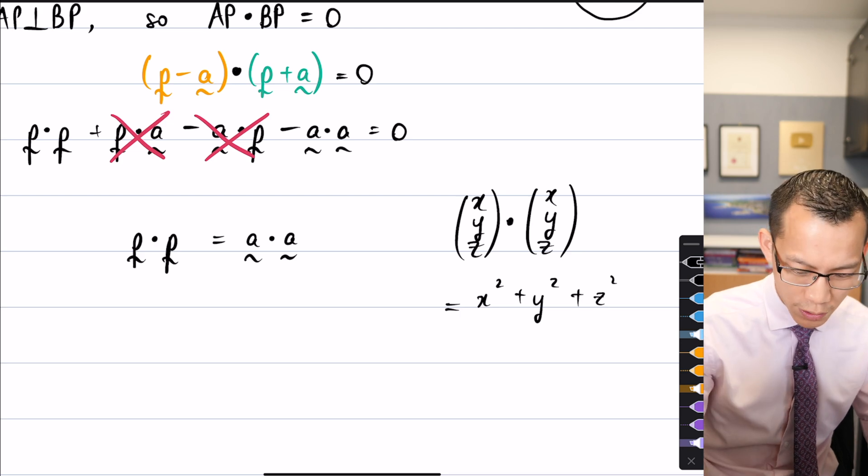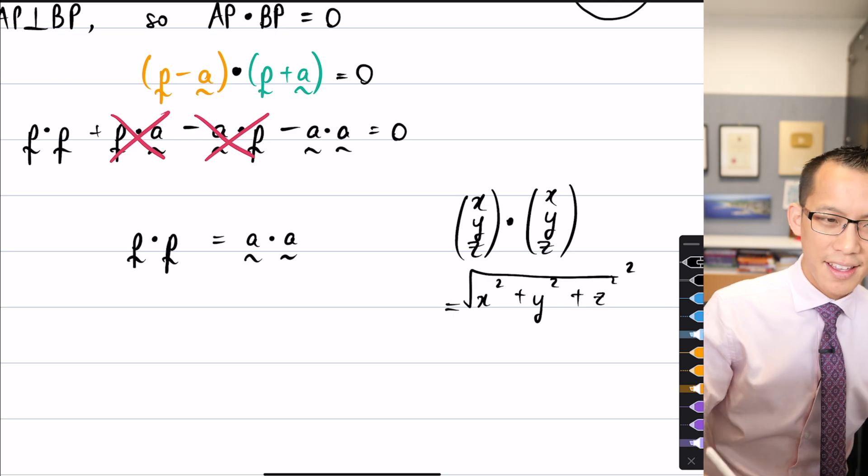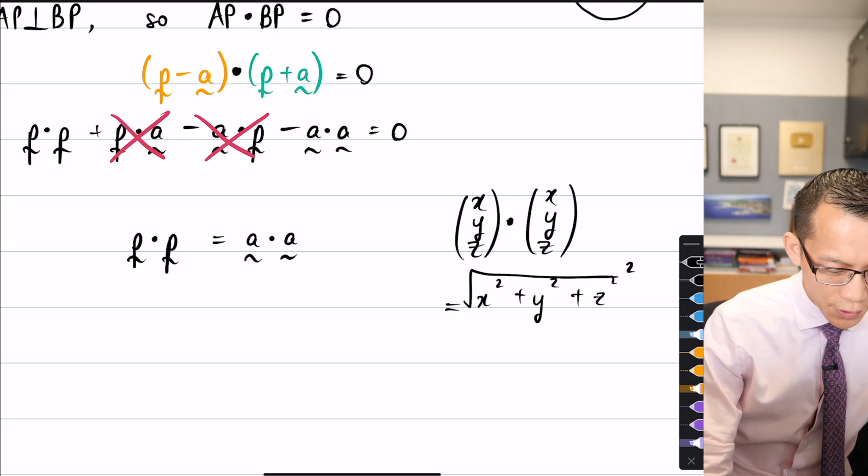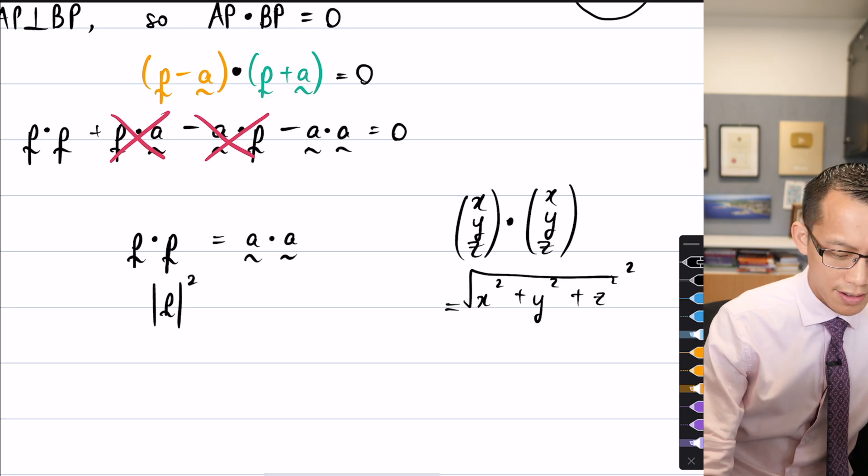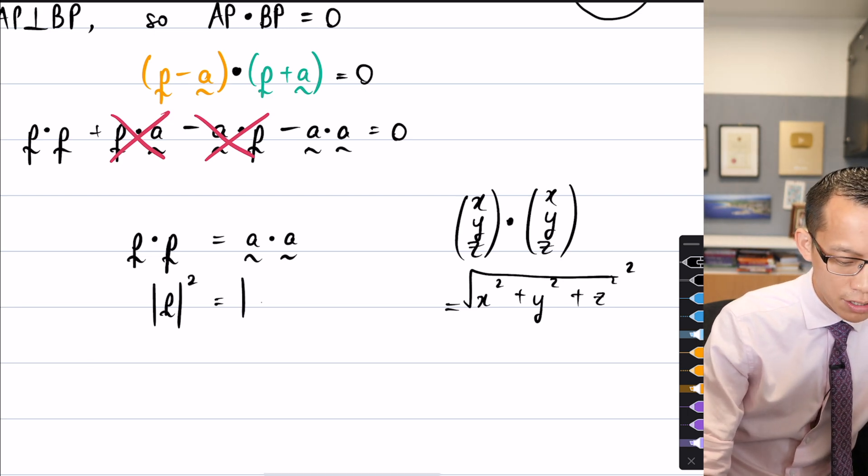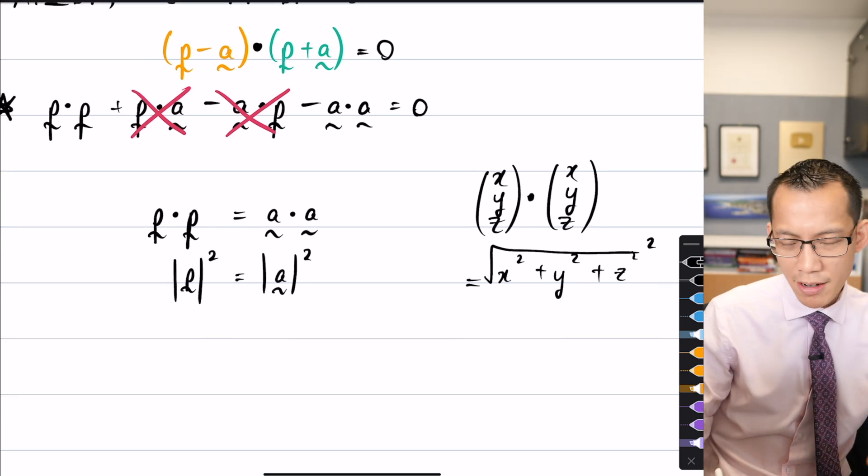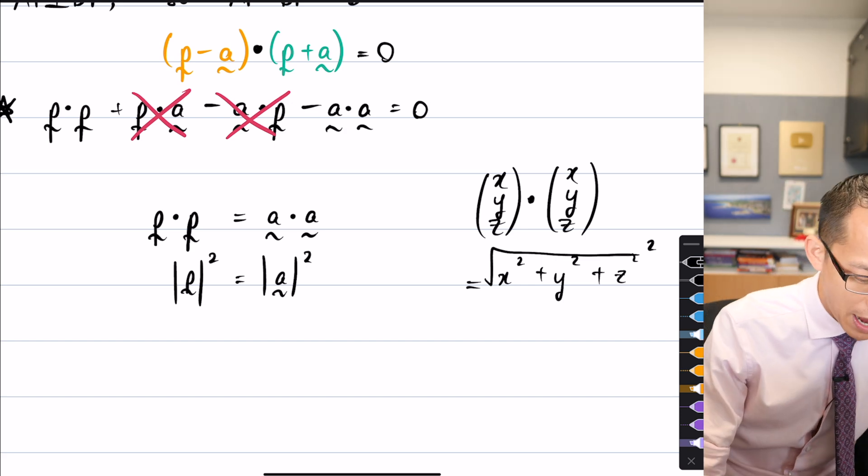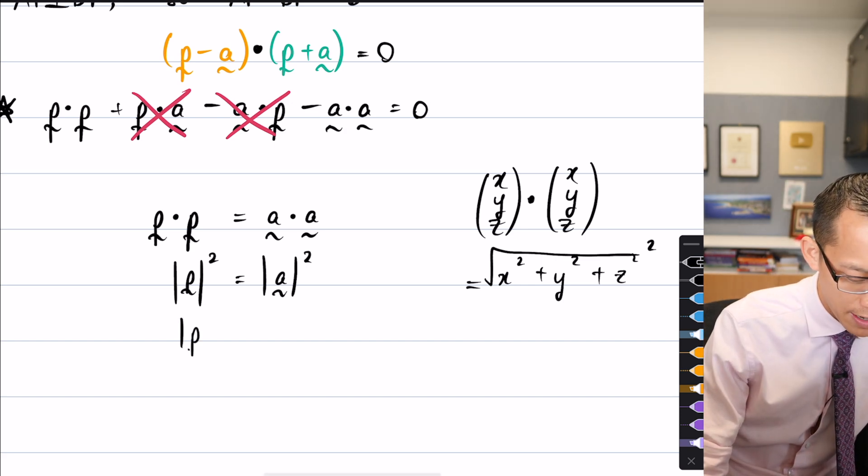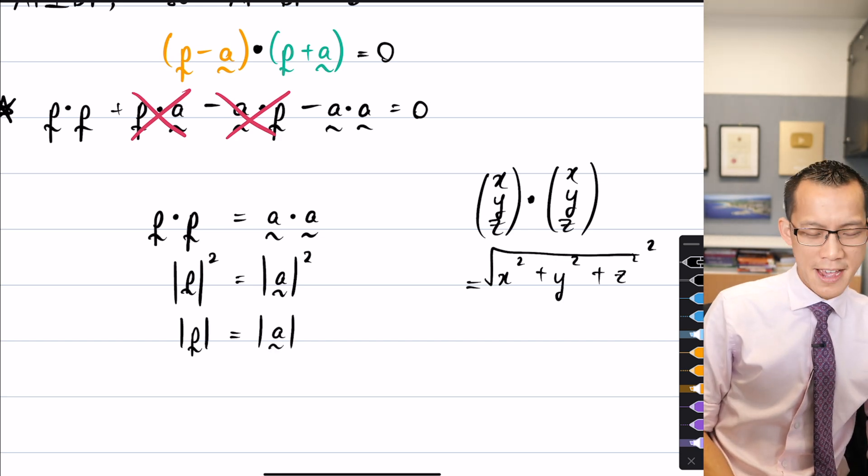Now, what this really is, is just, this is the square of the magnitude. Do you recognize that? Like, if I took the magnitude, there's Pythagoras, and then I've just squared it. So what I've got is the magnitude of P, but squared, that's the same as the magnitude of A, but squared. But hold on. These are all squared. These are really just distances. So I can just say the magnitude of P is the same as the magnitude of A.